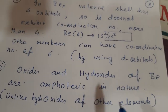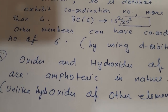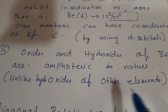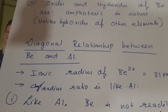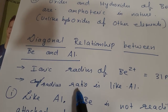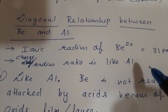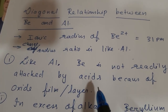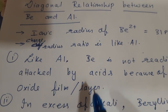Oxides and hydroxides of beryllium are amphoteric in nature — meaning both acidic as well as basic character — whereas hydroxides of other elements are not amphoteric. Regarding the diagonal relationship: the ionic radius of beryllium is very small at 31 picometers, but its charge-to-radius ratio is like aluminium's. Beryllium, like aluminium, is not readily attacked by acids because of the oxide layer on top of it, which prevents acid attack.